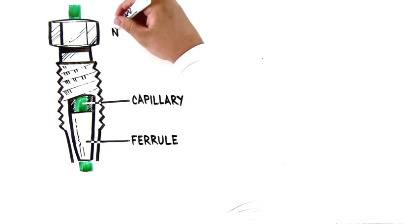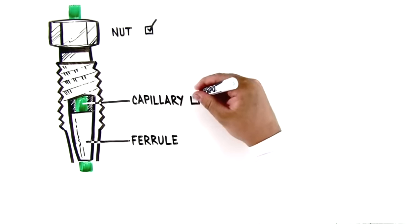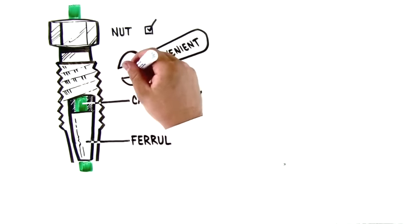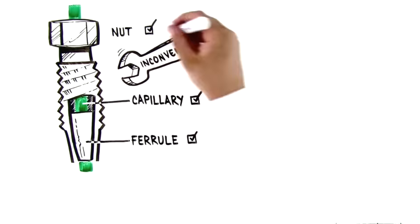Only when these three pieces are put together accurately can a proper sealing be achieved. The use of these three pieces is inconvenient, difficult, and requires the use of a wrench.